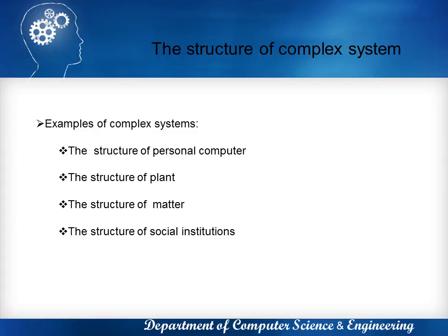Coming to the structure of plant, a plant consists of three major structures like roots, stems, and leaves, and each of these has its own structure. For example, roots encompass branch roots, root heads, root apex and root cap. Similarly, a leaf reveals its epidermis and vascular tissues. Each of these structures is further composed of a collaborative collection of cells.